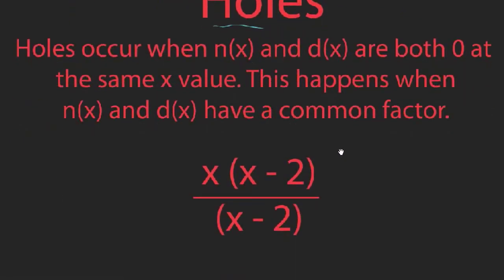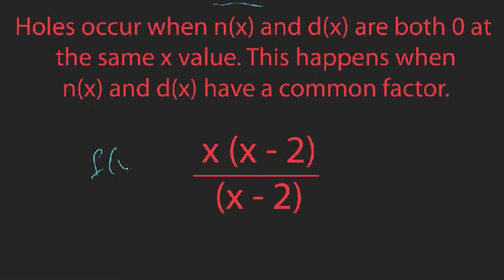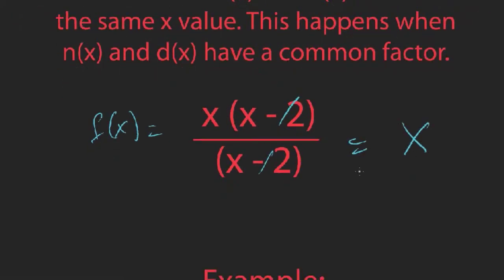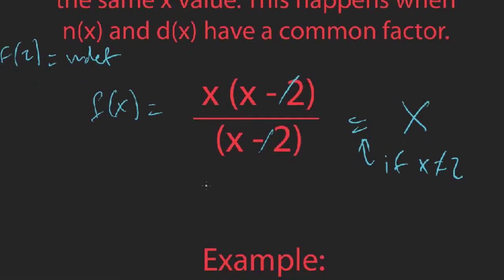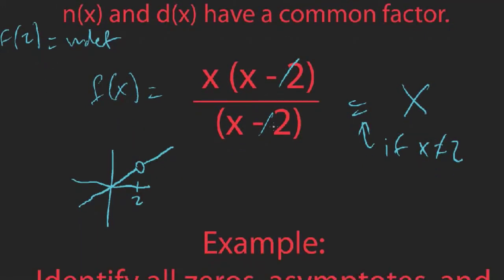A hole happens when both the numerator and denominator are zero at the same x value, which occurs when n(x) and d(x) have a common factor. For example, you might be tempted to cancel a common factor and simplify the function, and that is valid — but only if x does not equal 2, because f(2) is undefined (something divided by zero). For every x value other than 2 the graph looks like y equals x, but right at x equals 2 we have a hole, drawn as a little open circle.